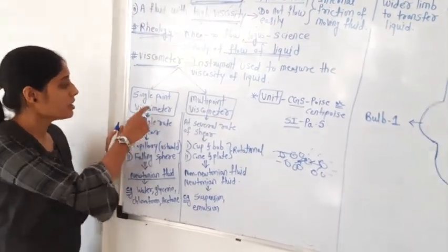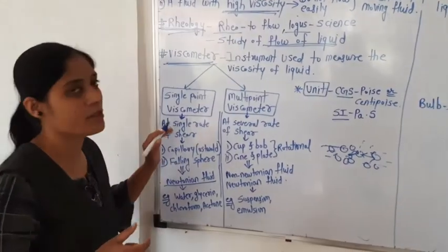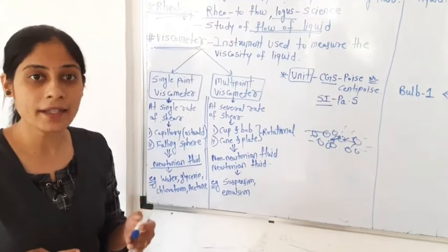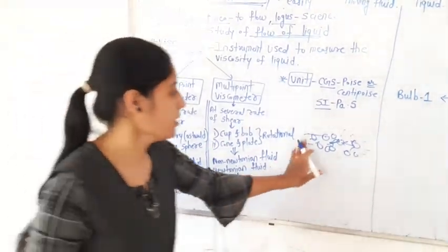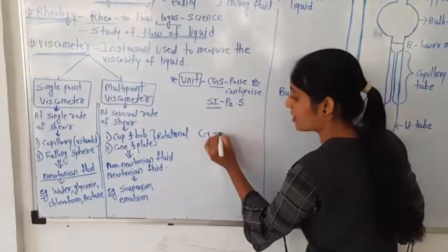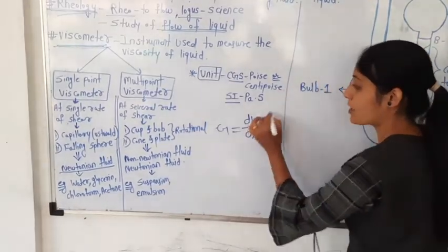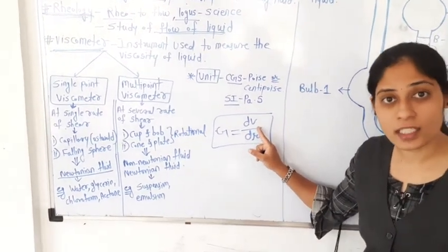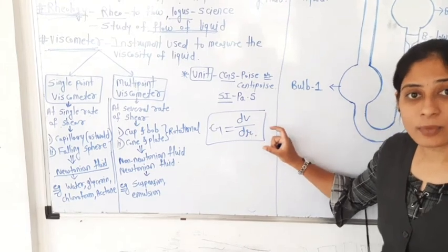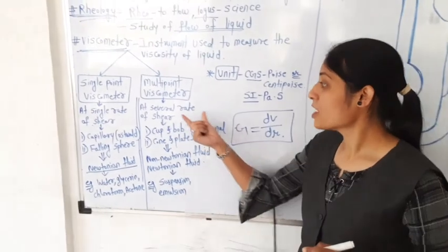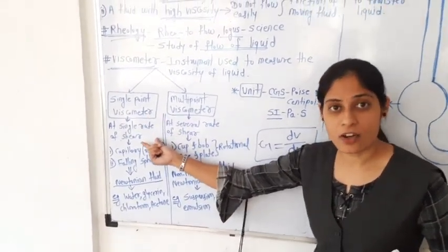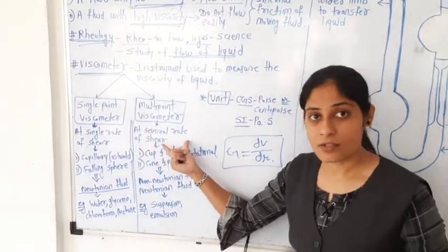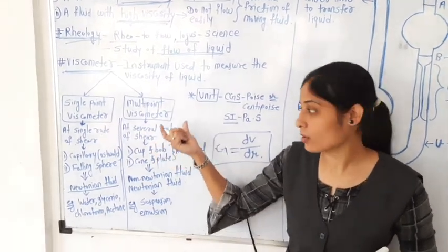The single point viscometer works at a single rate of shear, and the multipoint viscometer works at multiple rates of shear. So what is rate of shear? Rate of shear is denoted as G. G equals dV upon dr — that is, the change in velocity with change in distance. The velocity of the liquid sample changes with change in distance; that is called the rate of shear. The single point viscometer works at a single rate of shear, while multipoint viscometers use multiple rates of shear.